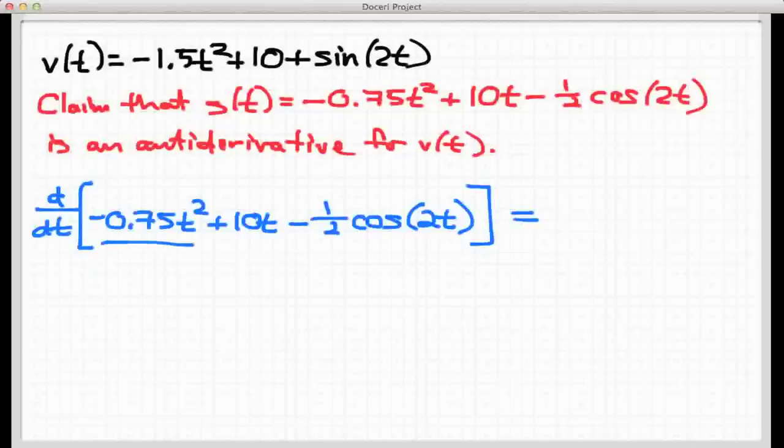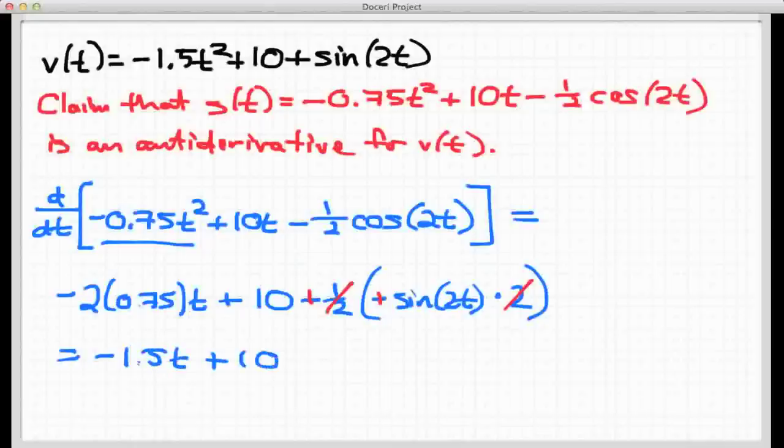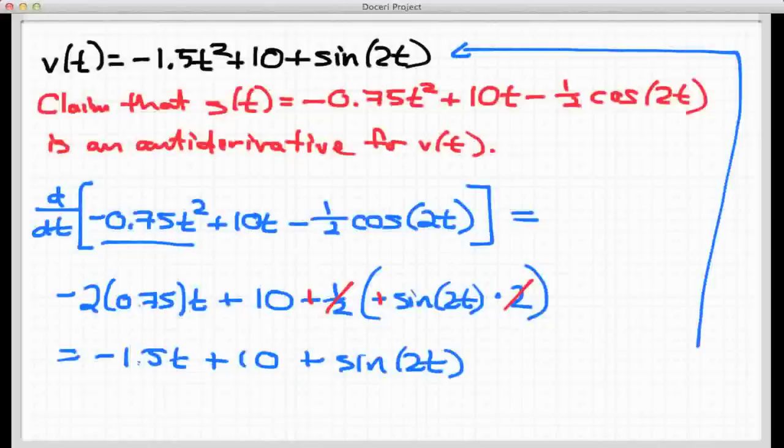So let's chug through the derivative process here. I'm going to take the derivative, first of all, of this first term, and that would give me negative, there's a 2 times 0.75 times t. The derivative of 10t is 10. I have a minus 1 half, and now the derivative of cosine 2t is going to be negative sine 2t. And then I have to use the chain rule and take the derivative of the 2t on the inside, and that gives me a 2. Now let's just see what this shakes out to be. I have several cancellations I can do: the 1 half and the 2 cancel. I have a minus and a minus, it makes a plus. Negative 2 times 0.75 is negative 1.5, that's times t. I was adding on a 10, and now all that's left over here is the sine of 2t.